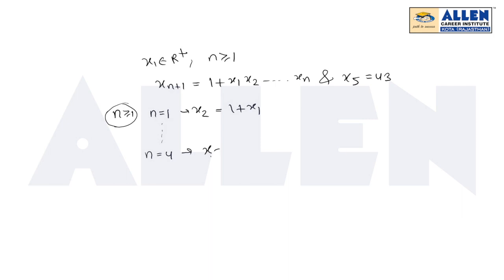x5 equals 1 plus x1 x2 x3 x4. Here we know that x5 is 43, so 1 plus x1 x2 x3 x4 equals 43. Therefore x1 x2 x3 x4 equals 42.